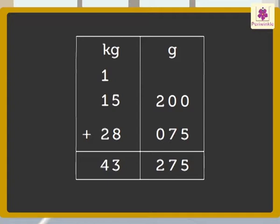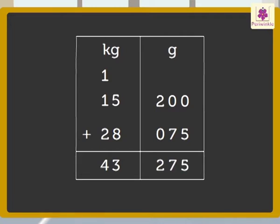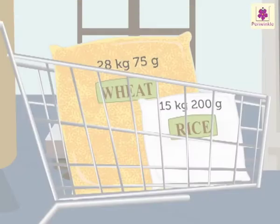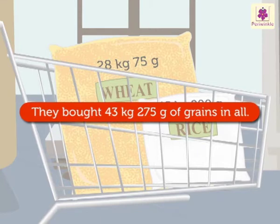And we get the answer as 43 kilograms 275 grams. Perfect! We bought 43 kilograms 275 grams of grains in all.